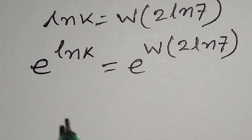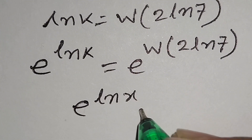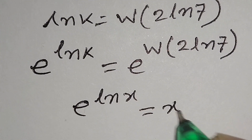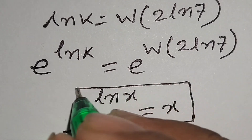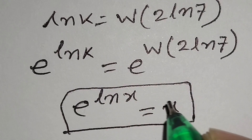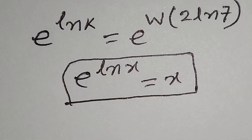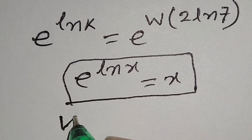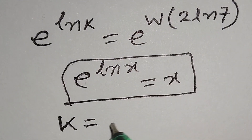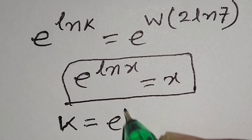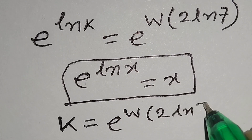We know that e to the power ln x is equal to x. According to this formula, e to the power ln k is equal to k. So we can write k is equal to e to the power W of 2 times ln 7.